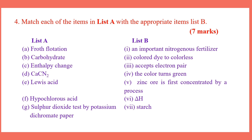Number 5: Zinc is first concentrated by a process — zinc ore is concentrated. Number B: Carbohydrate — carbohydrate contains number 7, starch. Number C: Enthalpy chain — enthalpy chain is listed as number 6, delta H net.